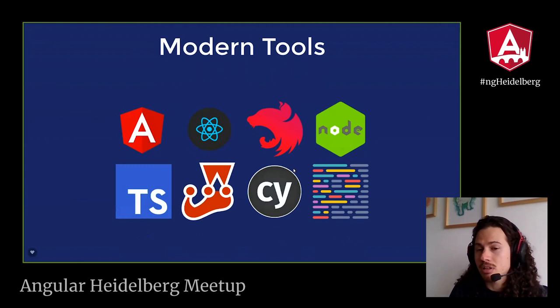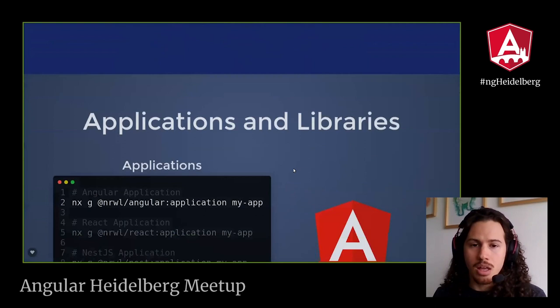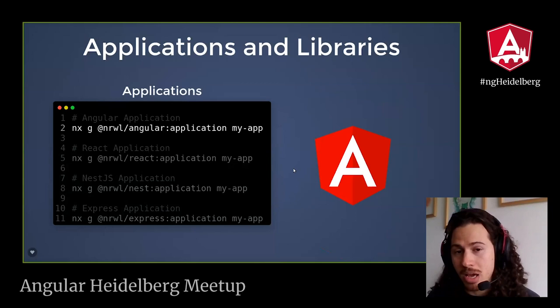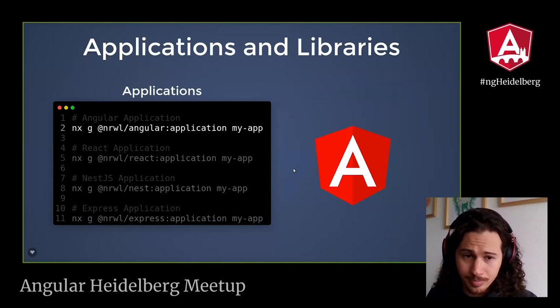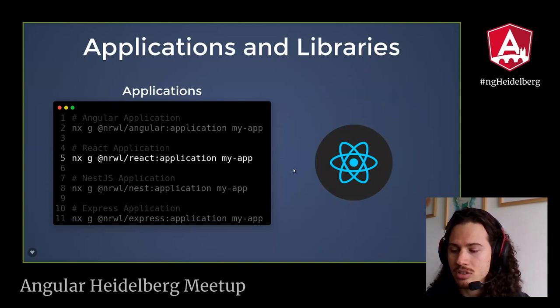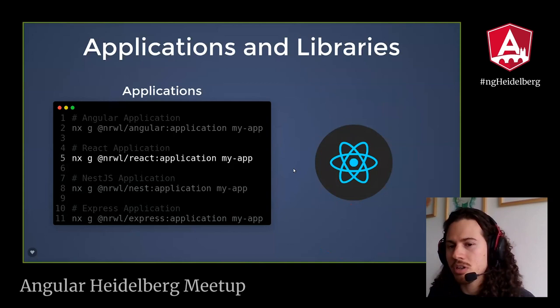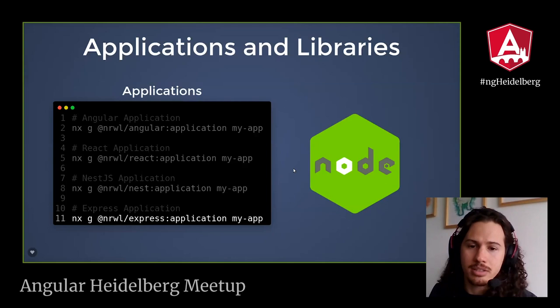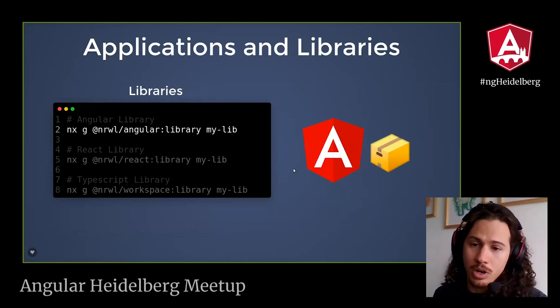For development tooling, NX uses TypeScript, Jest for unit tests, Cypress for end-to-end testing, and Prettier to format your code. NX is super simple — you have only applications and libraries. With just one command you can create an Angular application with all the configuration ready right away. You can also create a React application in TypeScript with end-to-end testing, unit testing, and build scripts already configured. You can also use Nest.js for the backend or a simple Node application with Express. For libraries, you can create Angular libraries, React libraries, or TypeScript libraries.